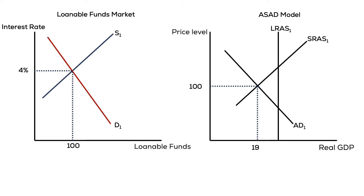To understand that, we have to look at our loanable funds market that we discussed earlier in the semester. When the Federal Reserve purchases securities, it is selling dollars to the market. Banks increase the amount of money they have to loan out. This is represented by an increase in the supply of loanable funds. The shift of the supply of loanable funds to the right causes interest rates in the economy to fall.